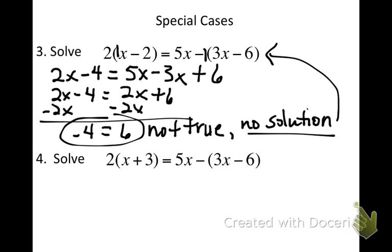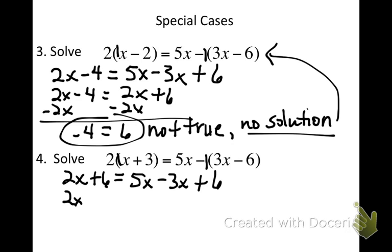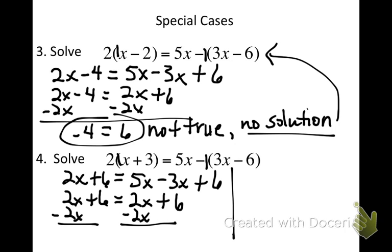Now let's look at the second special case. We've got a lonely variable — distribute to get 2x plus 6 equals 5x. Place that negative 1: negative 3x, and negative times a negative is a positive 6. On the right side I can combine those to get 2x plus 6. Do you see how the left side is just the same thing as the right side? 2 times some number plus 6 equals 2 times some number plus 6. Let's solve all the way — subtract 2x from both sides, and I get 6 equals 6. A number equaling itself is true, which means any number placed in for x would work. Our solution is all real numbers.